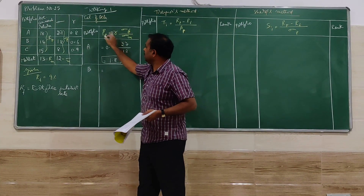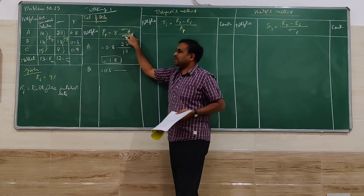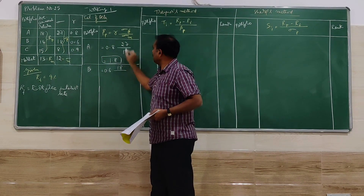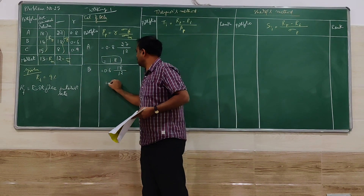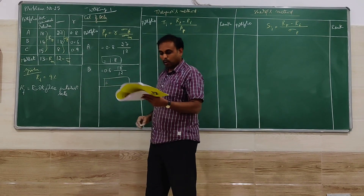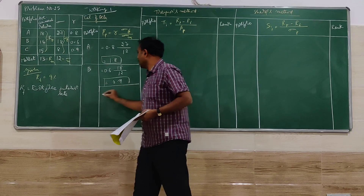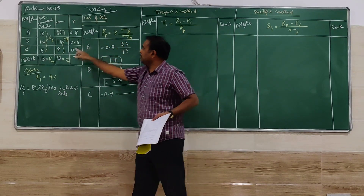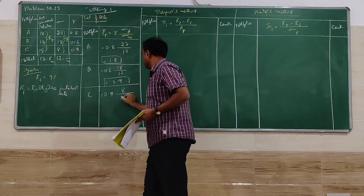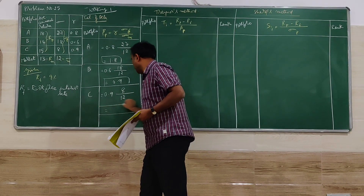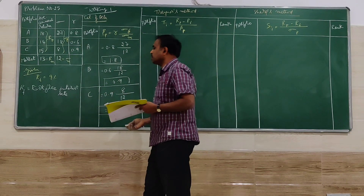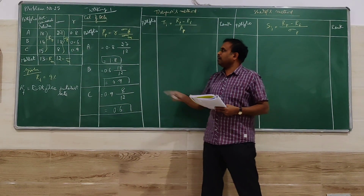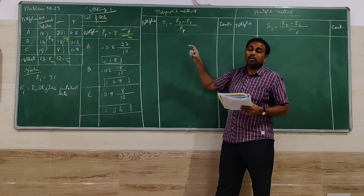For portfolio B, using the same formula: correlation is 0.6, standard deviation of B and the market standard deviation of 12 gives beta of B equal to 0.9. For portfolio C: correlation is 0.9, standard deviation of C is 8, and market standard deviation is 12, giving beta of C equal to 0.6.